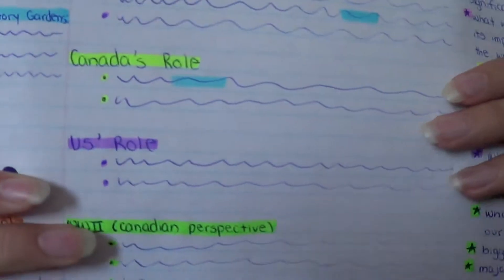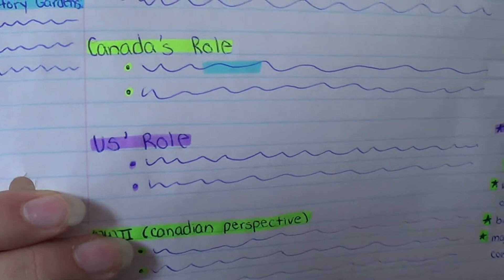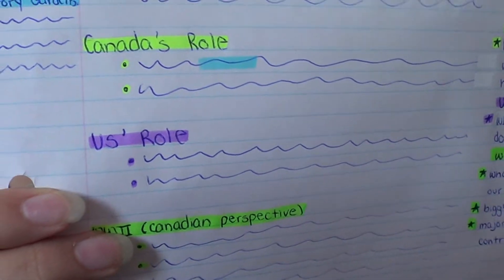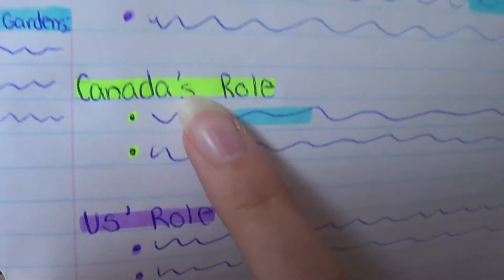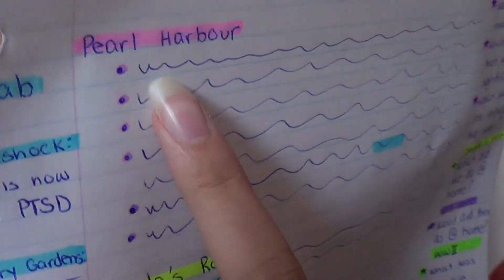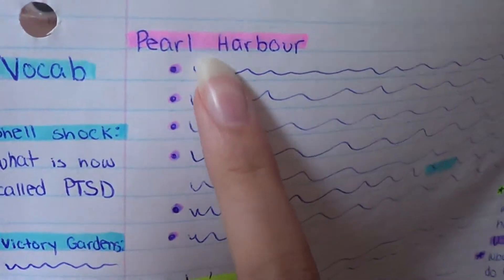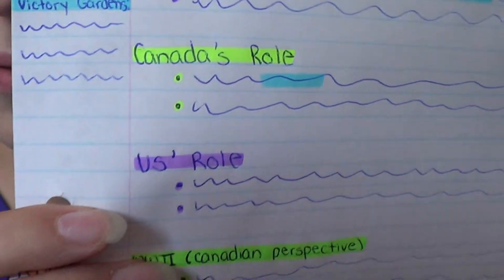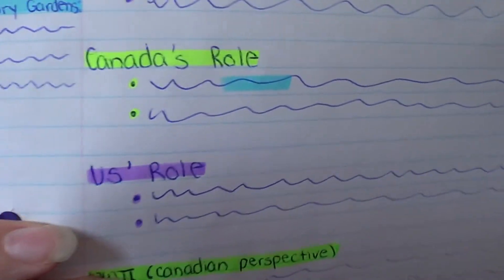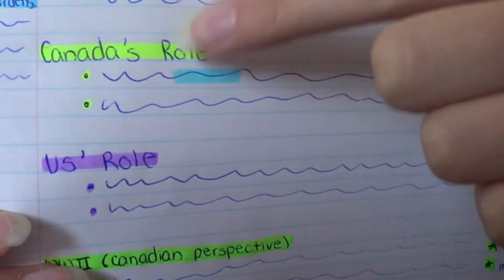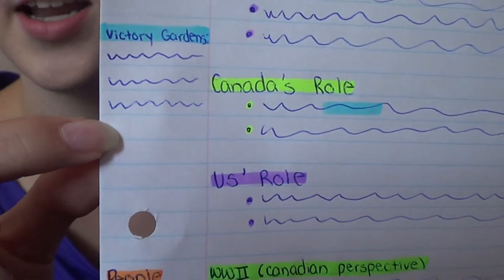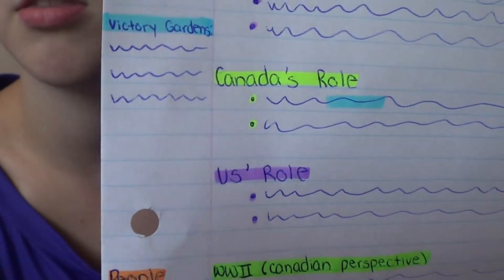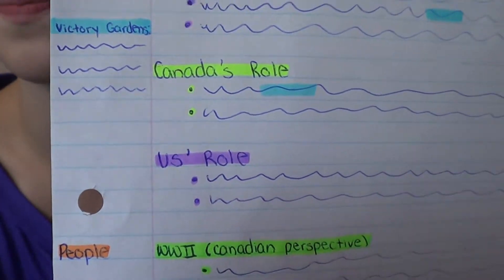Moving down, I just did the same thing — Canada's Role, put it in bullet points — and you'll notice that whatever color I highlight the top title in, I also use that color to go around the bullet points. I just think that helps keep my notes looking neat. Once again, if I had a vocab word I didn't know, I would highlight it and write the definition in the margin.